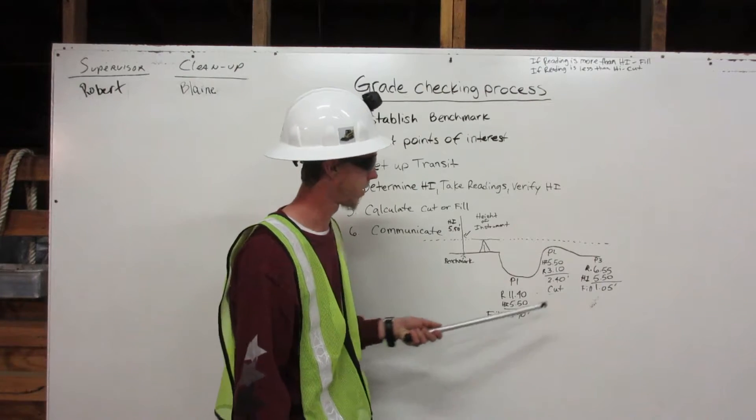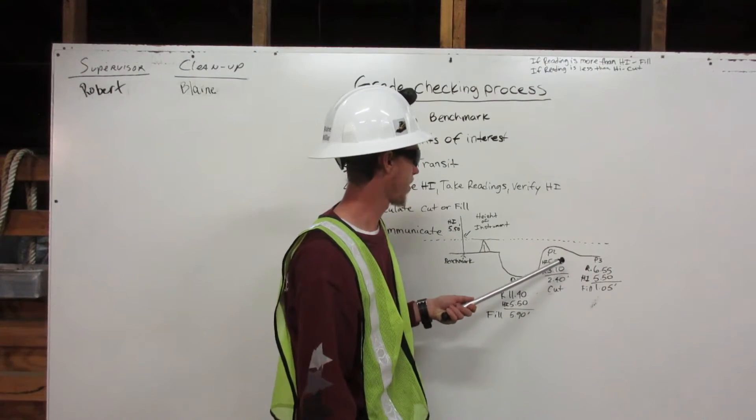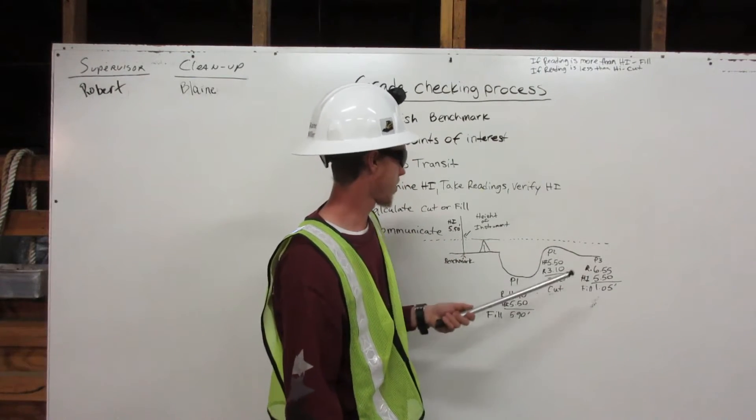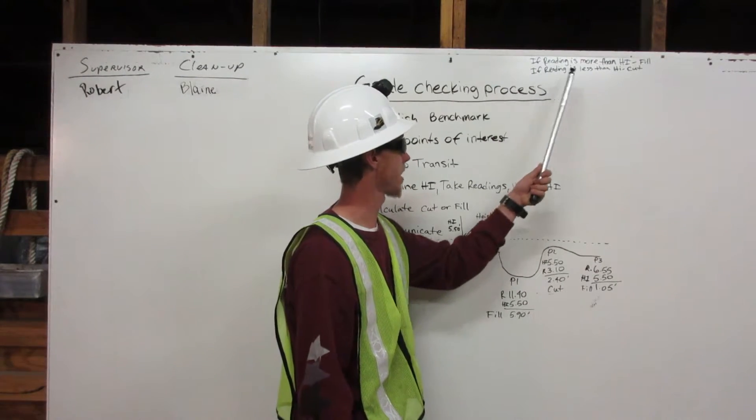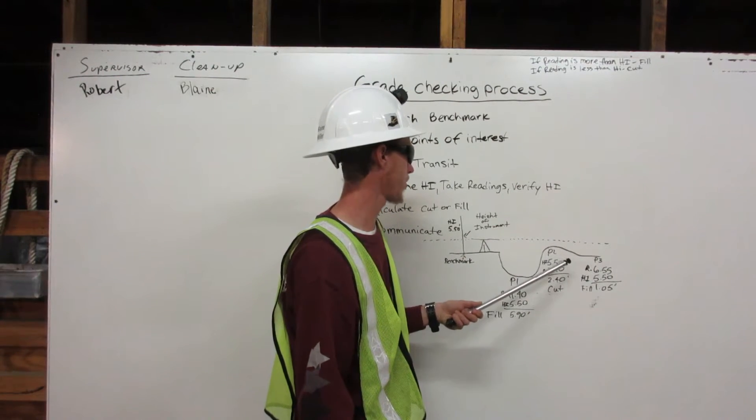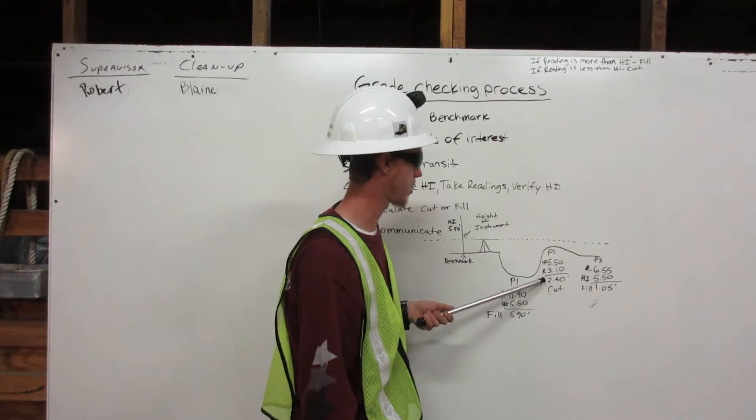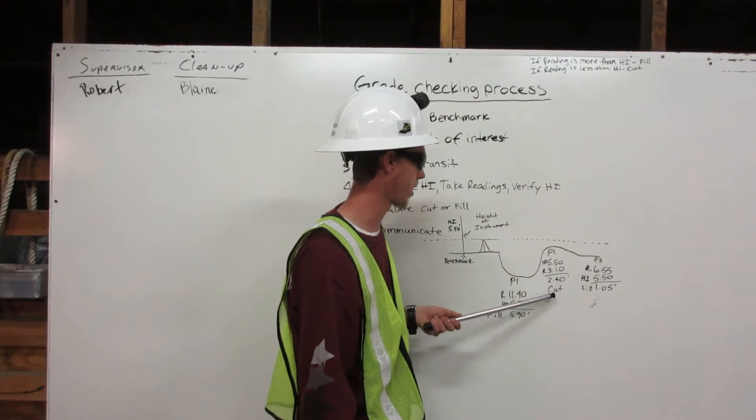So in our second point, if the reading is less than HI, we are going to cut. So 5.50 feet subtract 3.10 feet. We are going to get 2.40 feet. We are going to cut.